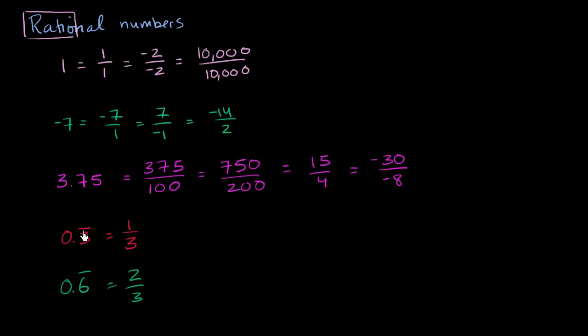And we'll see any repeating decimal, not just one digit repeating. Even if it has a million digits repeating, as long as the pattern starts to repeat itself over and over again, you can always represent that as the ratio of two integers. So I know what you're probably thinking. Hey, Sal, you've just included a lot. You've included all of the integers. You've included all of finite non-repeating decimals. And you've also included repeating decimals. What is left? Are there any numbers that are not rational?